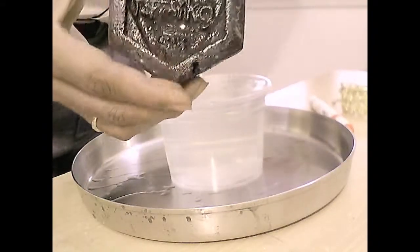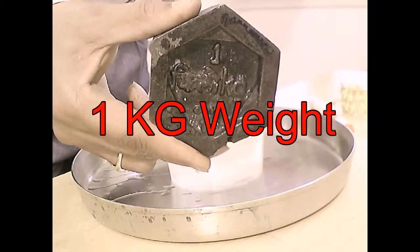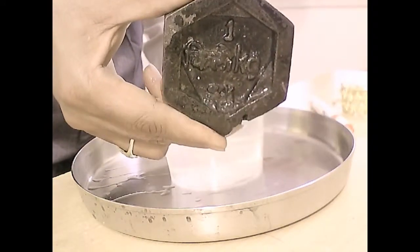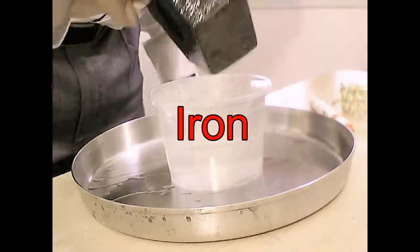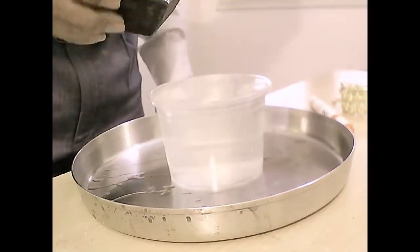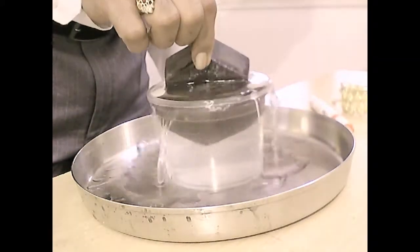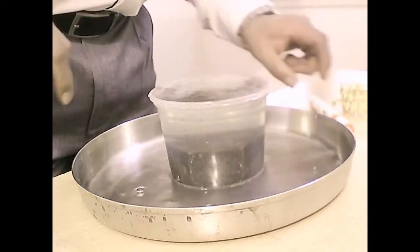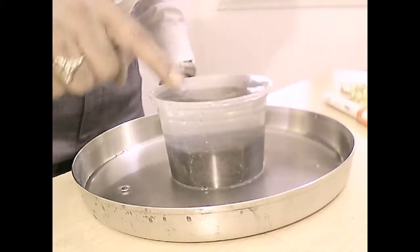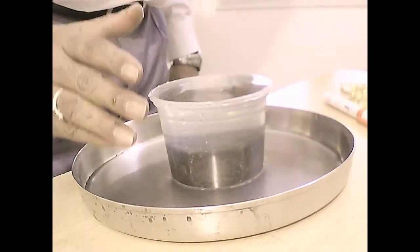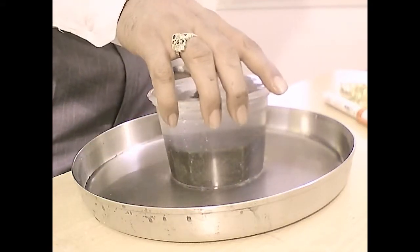And then take 1 kg measuring stone and since we know that it is made up of iron and its mass is 1 kg, I will put this into the water. Let us immerse completely into the water and you see the stone has displaced water equal to its volume.